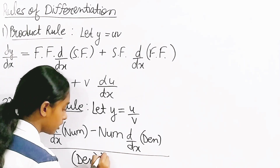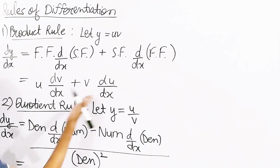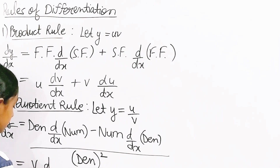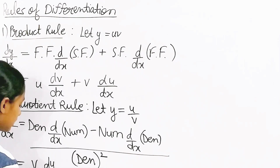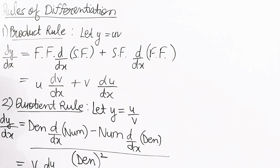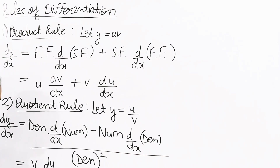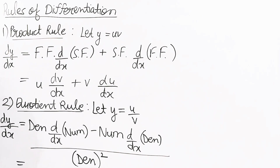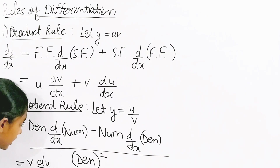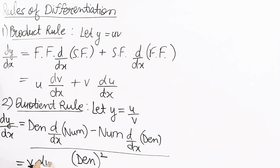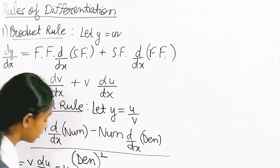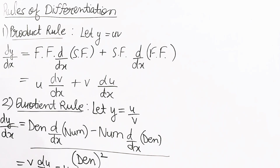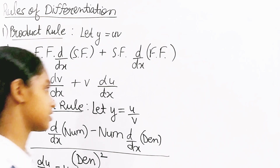Writing it out in full: the quotient rule formula is dy/dx = (v · du/dx − u · dv/dx) / v². So it's v times du/dx minus u times dv/dx, all over v squared. I hope it's clear — it's really easy, there's nothing to be confused about.